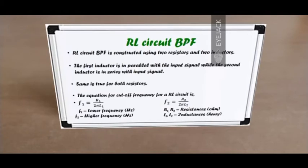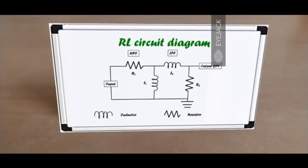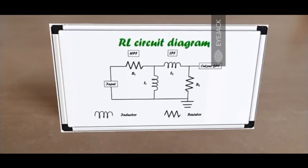Let's study the circuit diagram for the RL type bandpass filter. It is exactly the same structure as the RC circuit, except inductors replace capacitors. The first resistor is in series with the input and the second is in parallel, while the first inductor is in parallel and the second is in series with the input signal. Notably, resistor R1 and inductor L1 form a high pass filter, while resistor R2 and inductor L2 form a low pass filter, and the output is a bandpass filter.